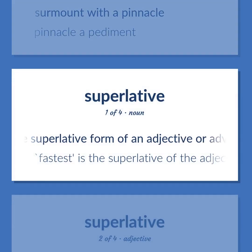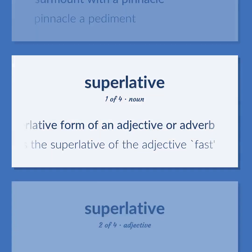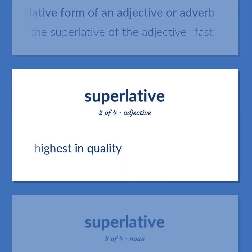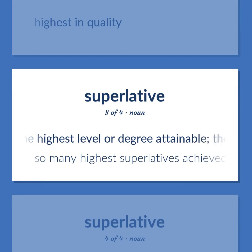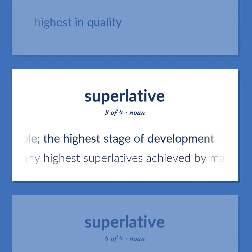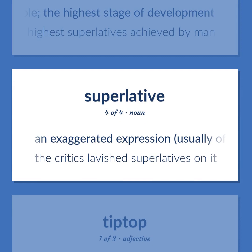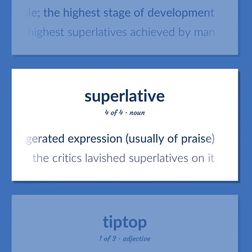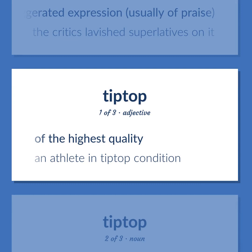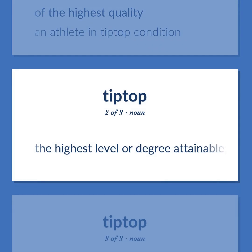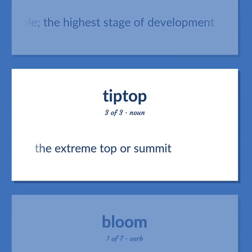Superlative: The superlative form of an adjective or adverb — 'fastest' is the superlative of the adjective 'fast.' Highest in quality. The highest level or degree attainable; the highest stage of development — so many highest superlatives achieved by man. An exaggerated expression, usually of praise — the critics lavished superlatives on it. Of the highest quality. Tip-top: An athlete in tip-top condition. The highest level or degree attainable; the highest stage of development. The extreme top or summit.